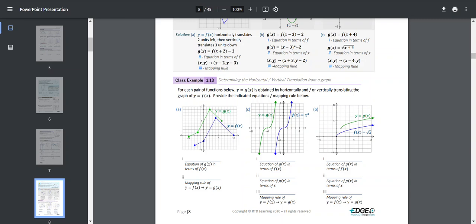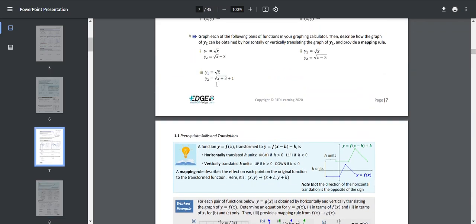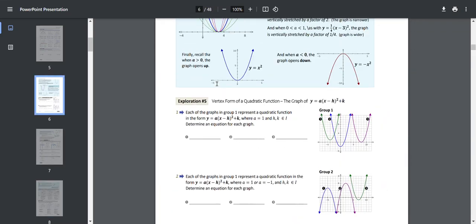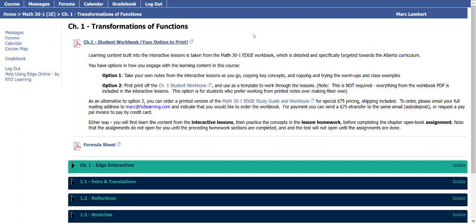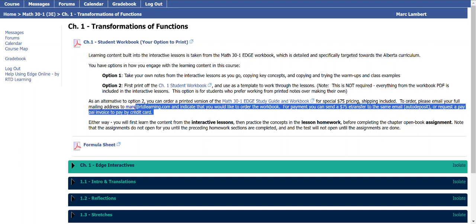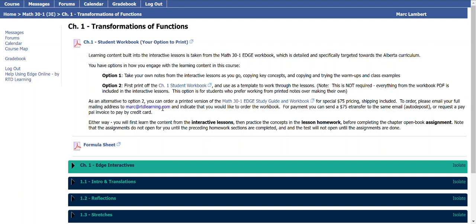You do not need to do this because everything that's in this workbook is going to be contained in the interactive lesson. But there is an option. And if you're interested in a physical copy of the workbook, you can order one. So that information is right here. You can actually get a physical copy mailed to you of our Math 30-1 Edge workbook, and then you can work on that to follow along on all the lessons. Again, this is not required, but this is just an option that is available to you.